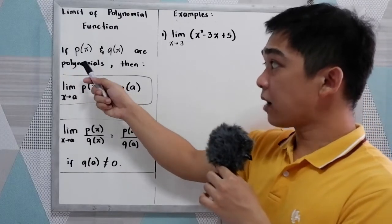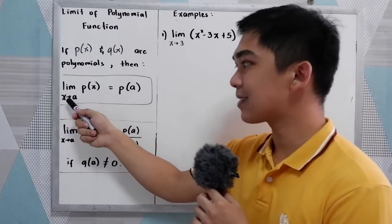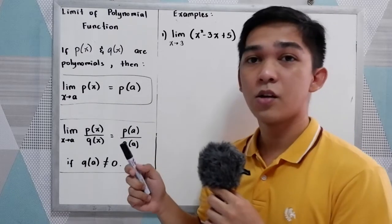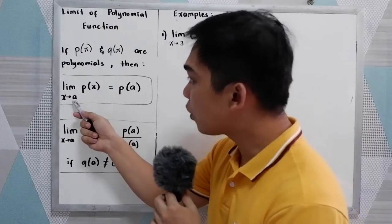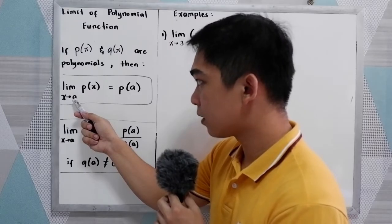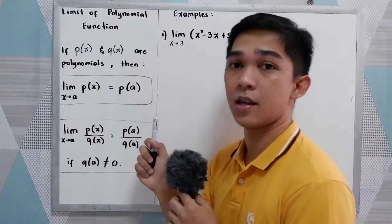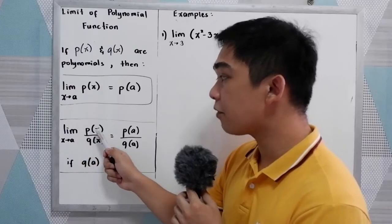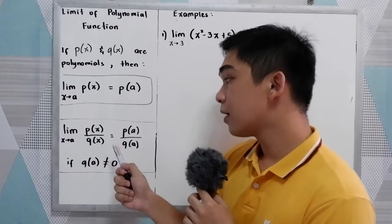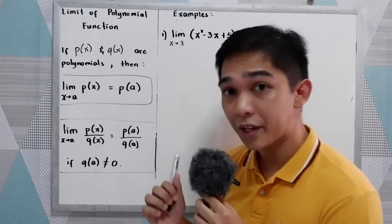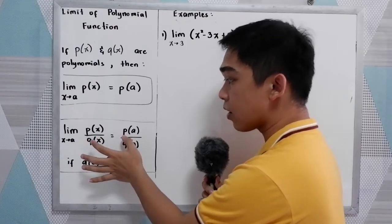So if P of X and Q of X are polynomials, then the limit of P of X as X approaches A is equal to P of A. We just treat this as a polynomial function and substitute the value of A into X, giving us P of A. Likewise, if we have the limit of P of X over Q of X as X approaches A, that is equal to P of A over Q of A — we simply substitute A into X.